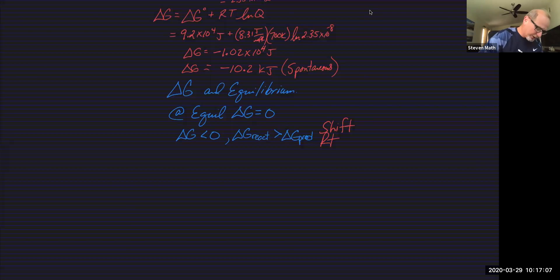Conversely, if we look at this in terms of delta G being greater than zero, then what we have is delta G of the reactants are too small compared to delta G of the products. And that means this is going to shift to the left.